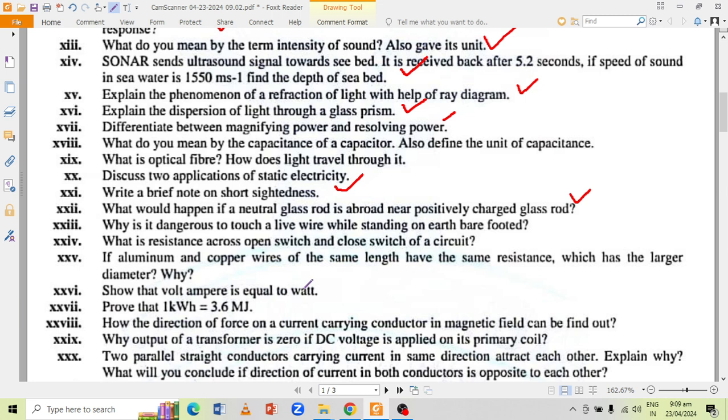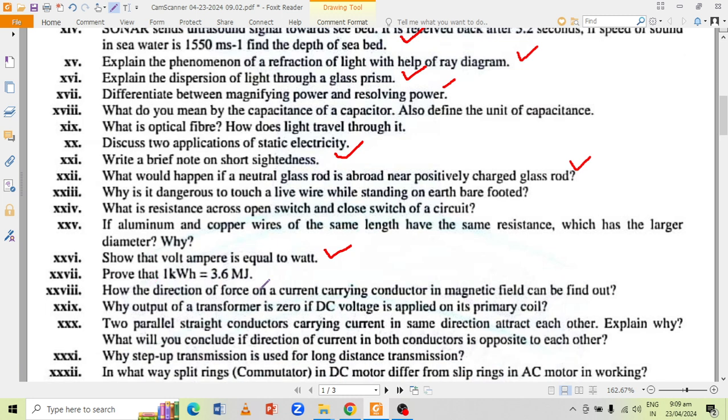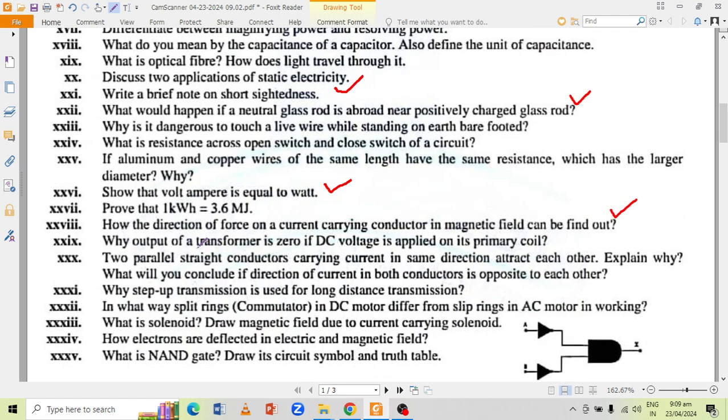If aluminum and copper wires of the same length have the same resistance, which has the larger diameter? Show that volt-ampere is equal to watt, or prove that one kilowatt-hour is equal to 3.6 megajoules. How the direction of force on a current carrying conductor in magnetic field can be found out? Why output of a transformer is zero if DC voltage is applied on its primary coil?